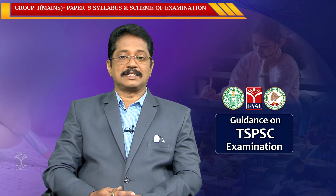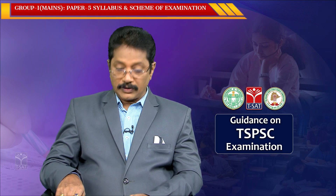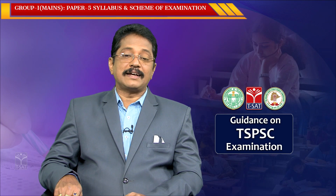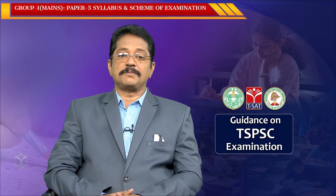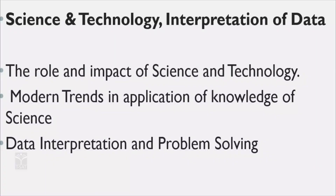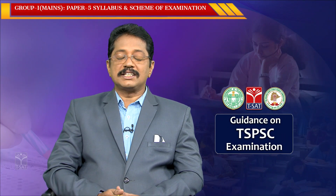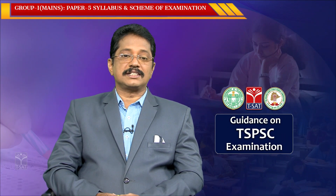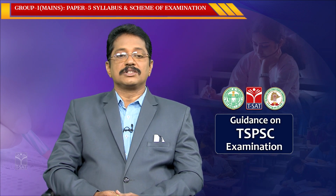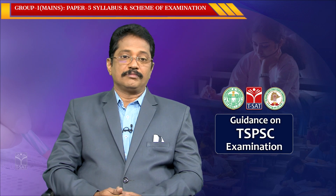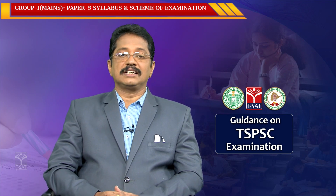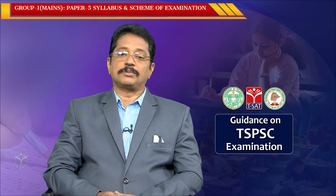Now I am going to discuss the syllabus and how we are going to prepare. In Paper 5, we have three sections: Section 1 is the role and impact of science and technology, Section 2 is modern trends in application of knowledge of science, and Section 3 is data interpretation and problem solving. Each section carries 50 marks, totalling 150 marks.